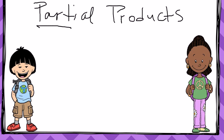When we're doing double digit times double digit multiplication, you have the option to use this strategy. So we're going to start with a problem today. We're going to go with 34 times 27.